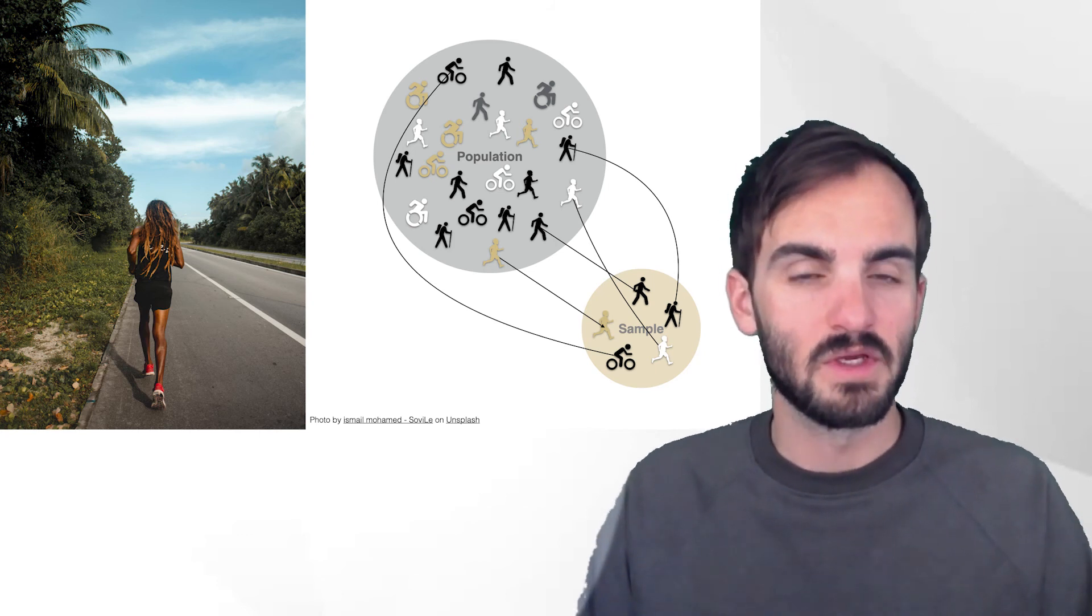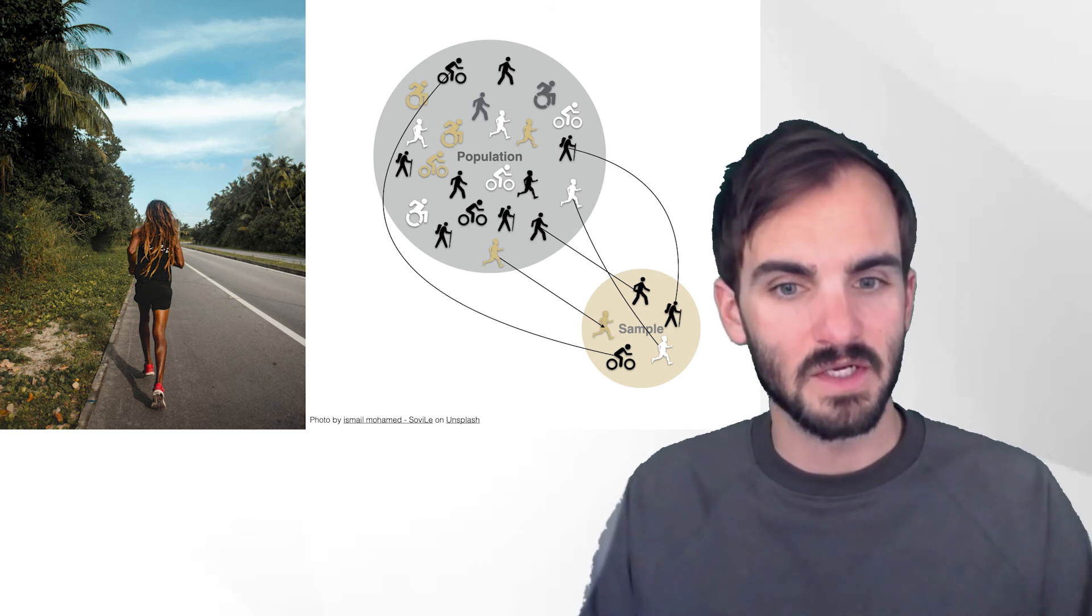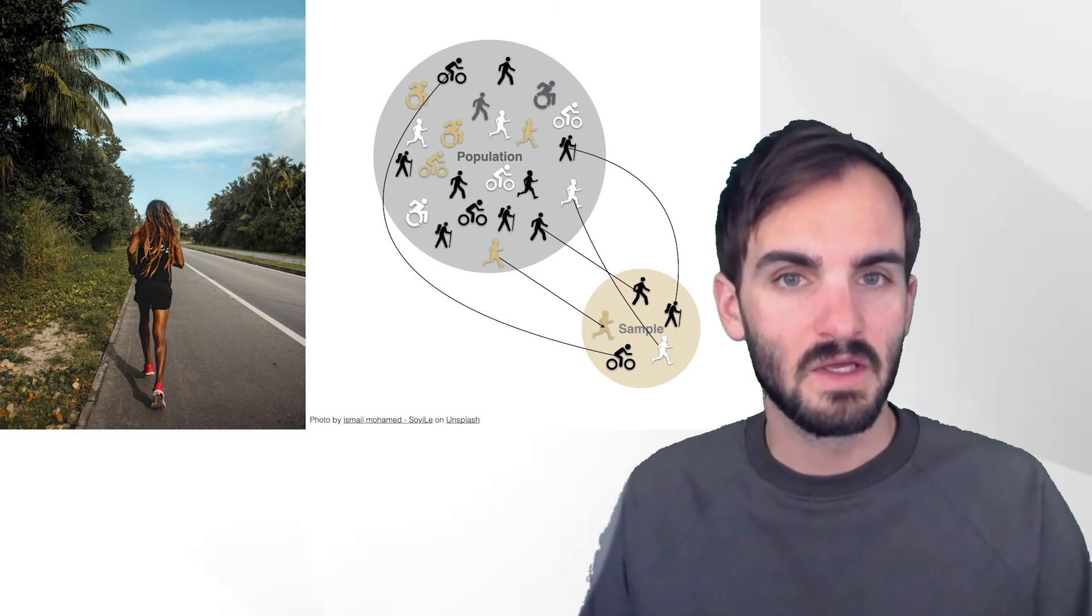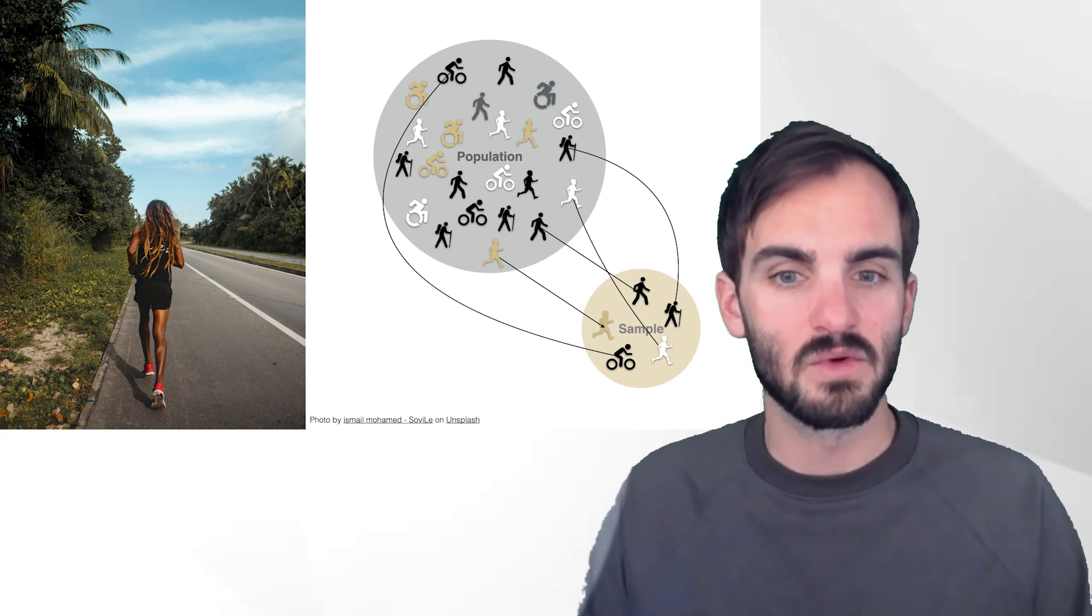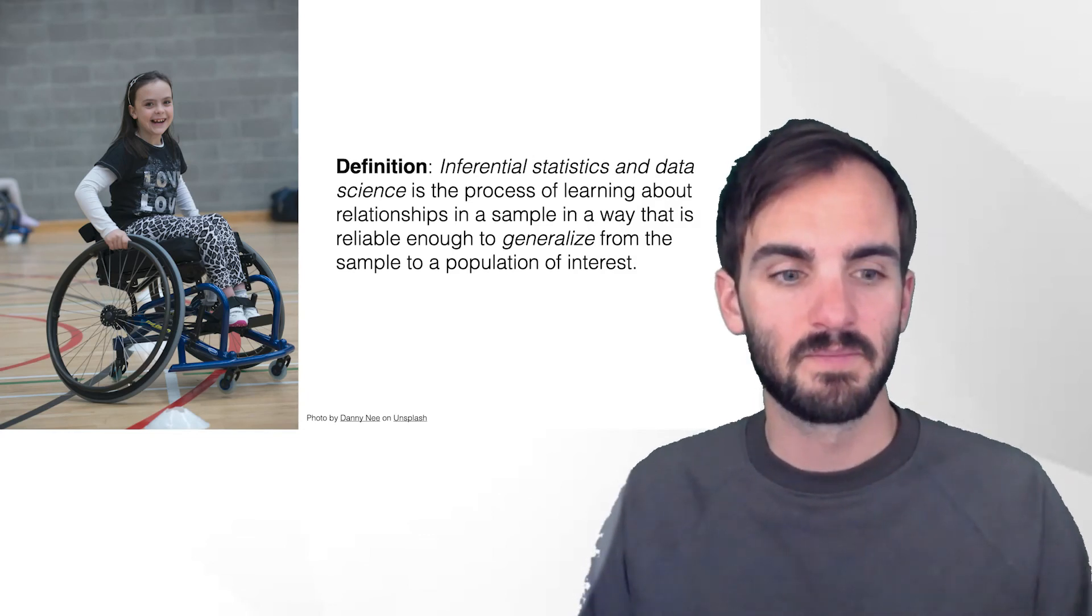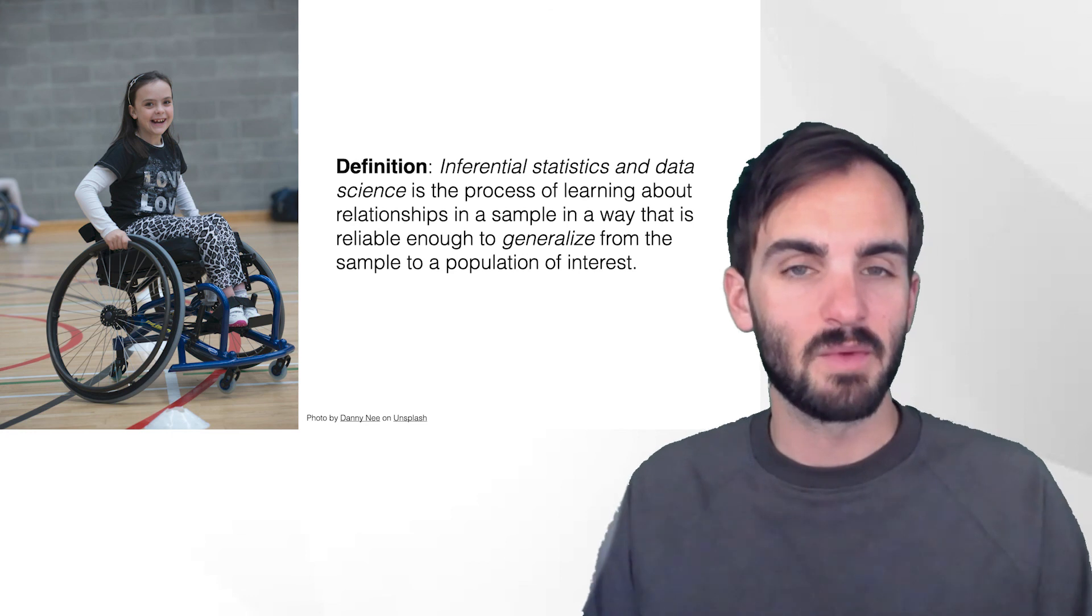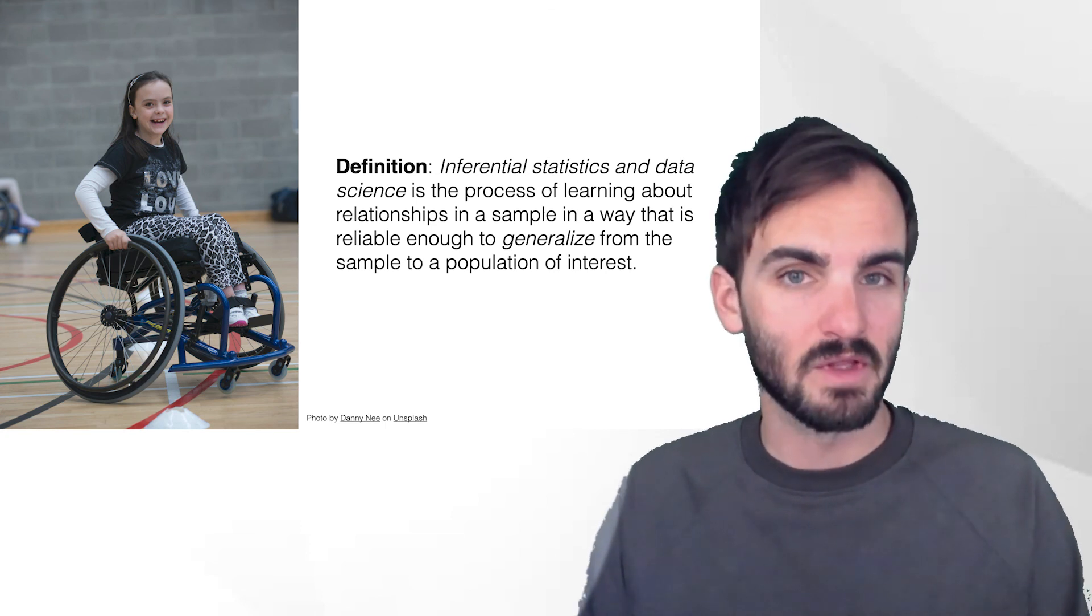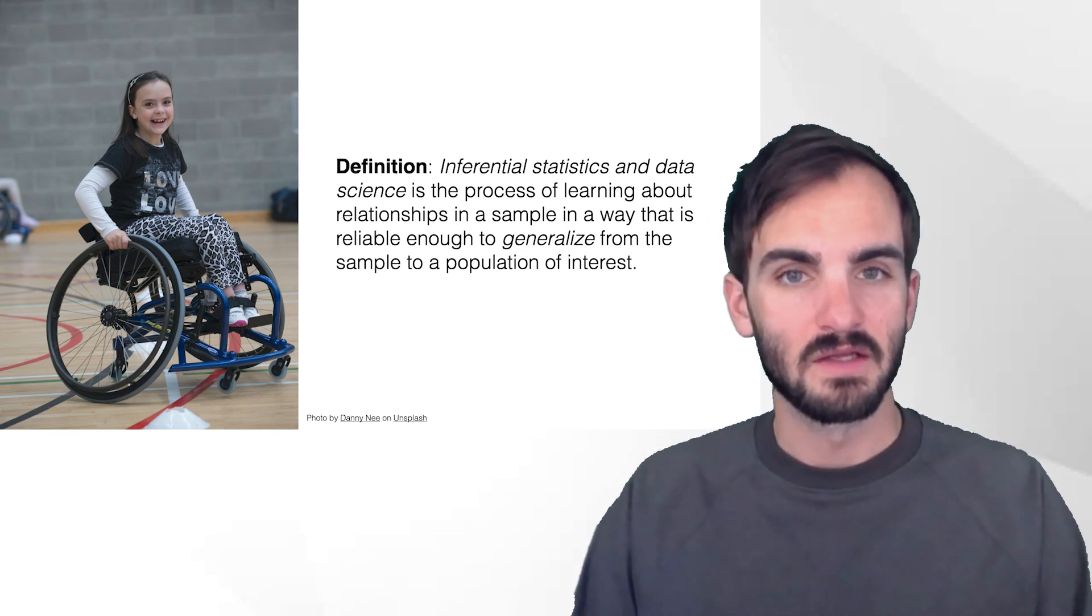And once we measure the data in the sample, we could model it using a statistical model. So we could think about whether or not they exercise, what type of exercise they do, their age, preexisting conditions, how long they're exercising. All of these different variables can be inputs to the model. We could also track their weight. So measure whether they've lost or gained weight or stayed the same. And then we can try to come up with a relationship in the sample and then use statistical techniques to generalize that to the full population. And what we've just described is really the process of inferential statistics and data science, which is the process of learning about relationships in a sample in a way that's reliable enough to generalize from the sample to the population of interest. So in this course, we'll be concerned with modeling these relationships and trying to make sound generalizations.